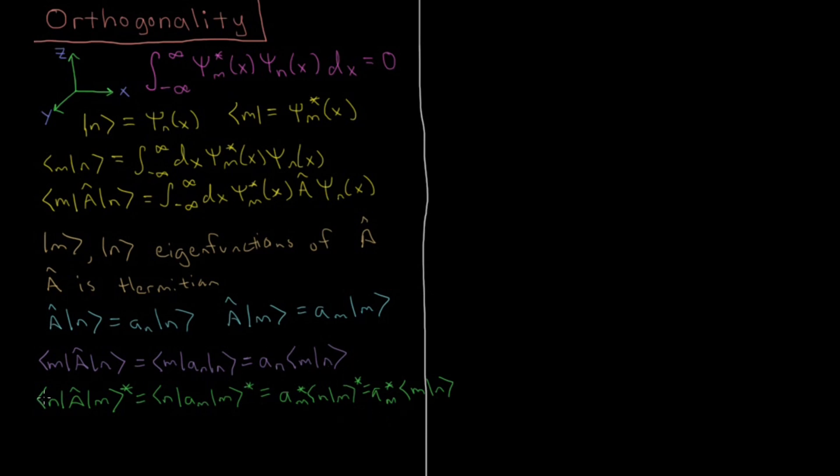This is important because according to the definition of Hermitian operators, which we looked at a little while ago, the integral m, a, n is equal to the integral n, a, m star. That's a general property of Hermitian operators, and we derived that a couple videos ago. So because of this, we see that these two lines up here that we just derived are equal.